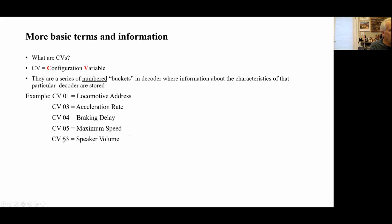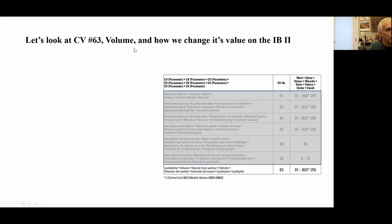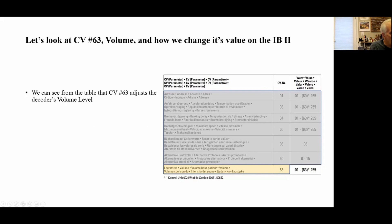A table of CVs that you can change is usually found in the manual that came with your loc or your decoder. If you have a Marklin locomotive and you flip to the back of the little pamphlet that came with it, you'll often see a little booklet with multi-languages. We're going to take a look just as an example at CV63 — volume — and how we change that on the IntelliBox. We can see that CV63 is indeed the volume, and the range that we can set it to is from 1 to 255.